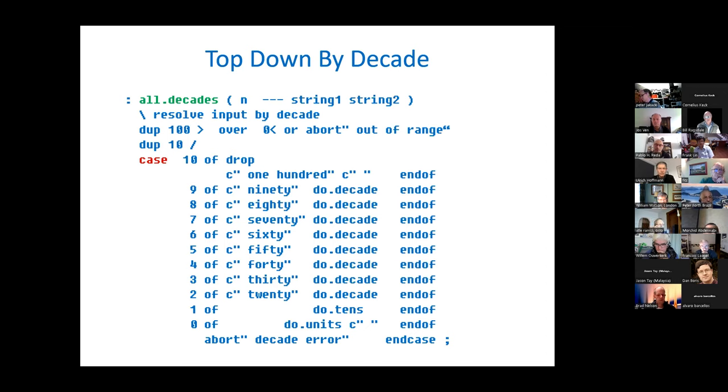Now we're getting a wrapper that begins to do all the decades. We bring the number in. First, the dup 100 greater than is an error check to see if we're out of range. As long as we're in range, we take our input number, we divide by 10, and this gets us into the decade. So at this point, we know are we between 0 and 9, between 10 and 19, and so on, up to 90 to 99. If we get a quotient of exactly 100, that means we've divided 100 by 10, and we get 10, and so this gives us the string one hundred.